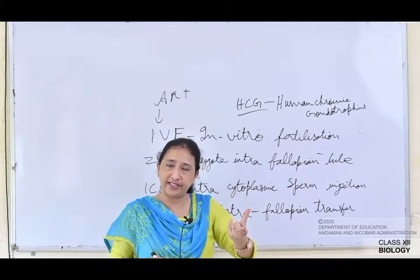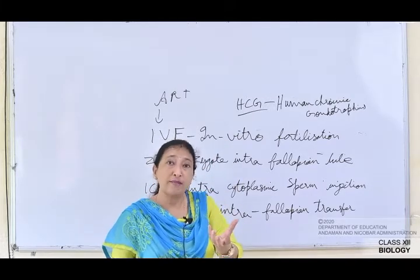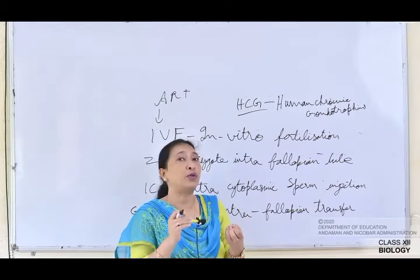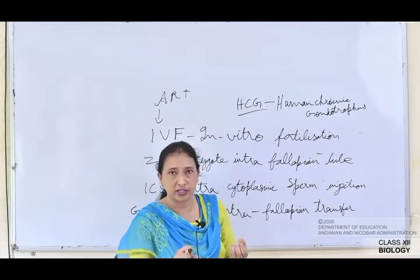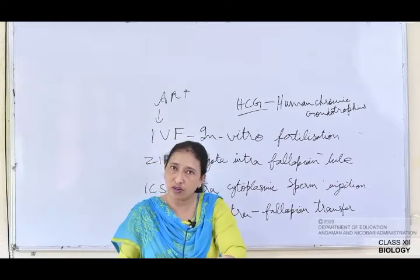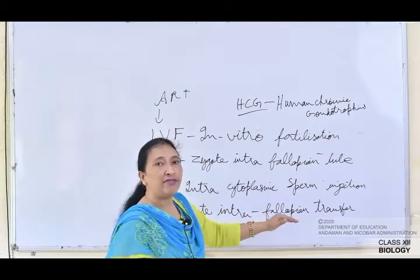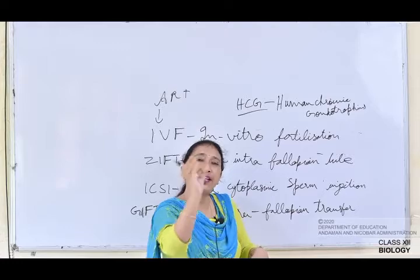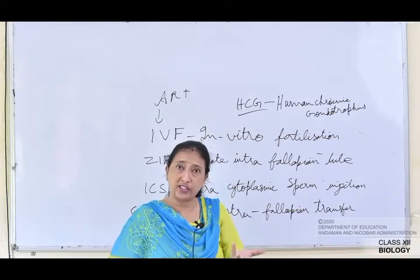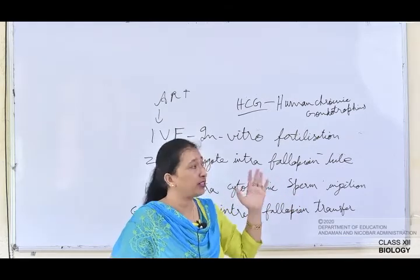The sperm injection can be given along with the transplanted ovum so the zygote will be formed and further development takes place. GIFT is also used when the fallopian tubes are blocked or the fimbriae doesn't function properly. The gamete — that is, the ovum — is transferred to the fallopian tube, where it meets the sperm naturally or by intrauterine insemination.